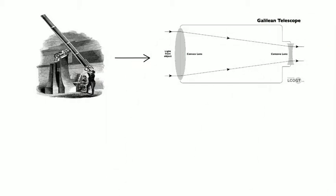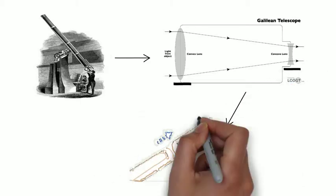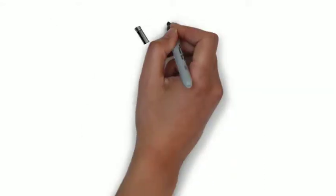Basically, what he did is join two lenses. One convex in the bigger part and concave lens in smaller eyepiece area and joined them using suitable metals and made it a hollow long cylindrical thing.